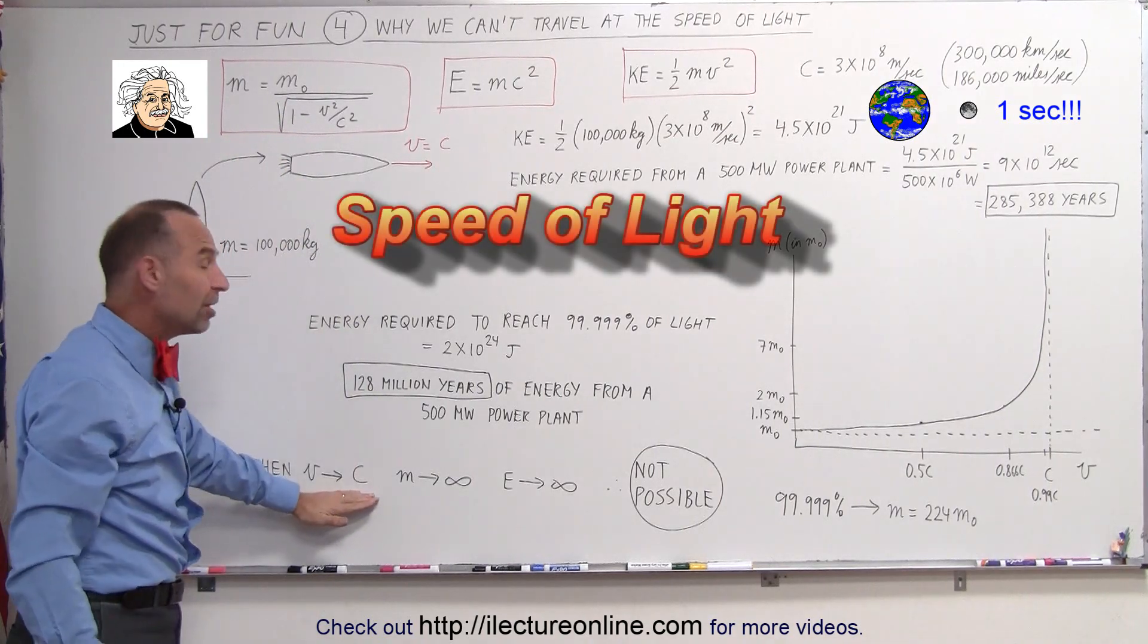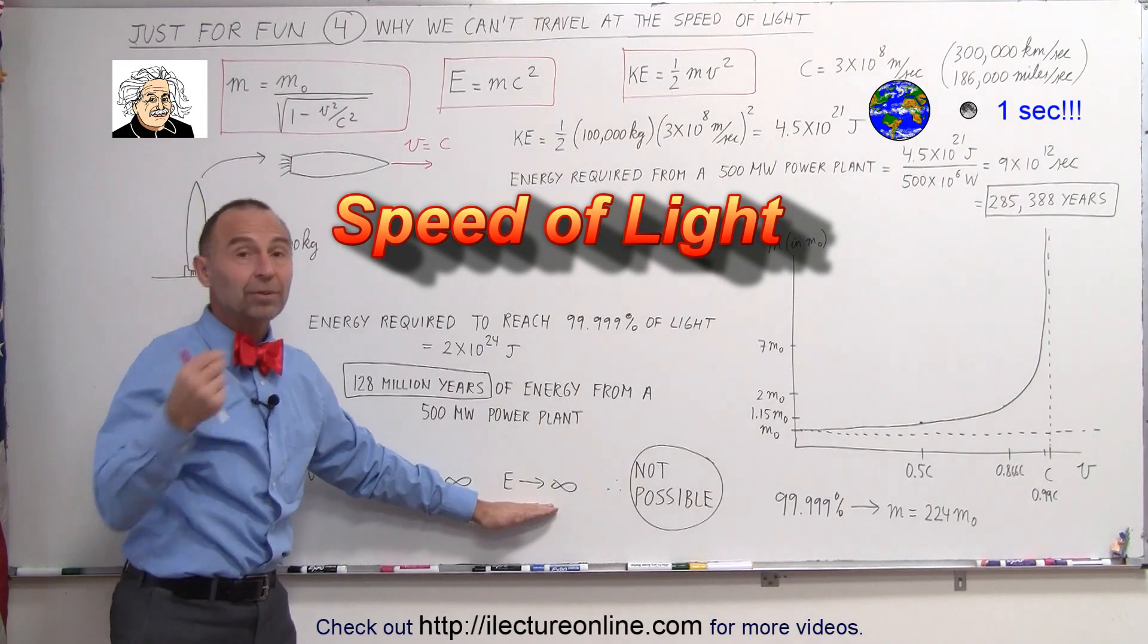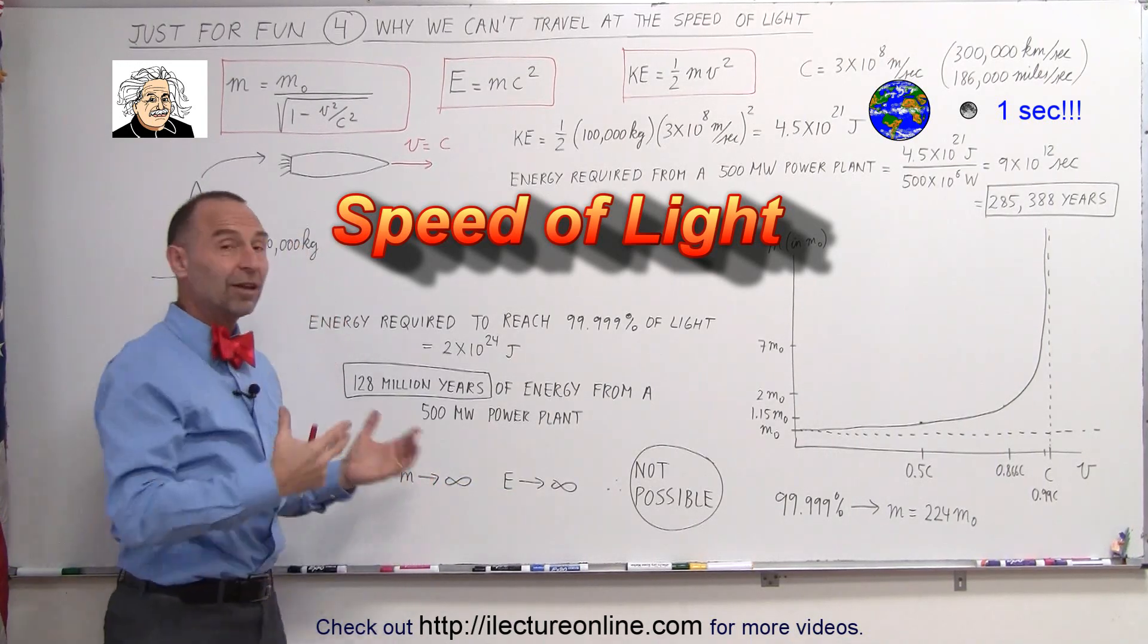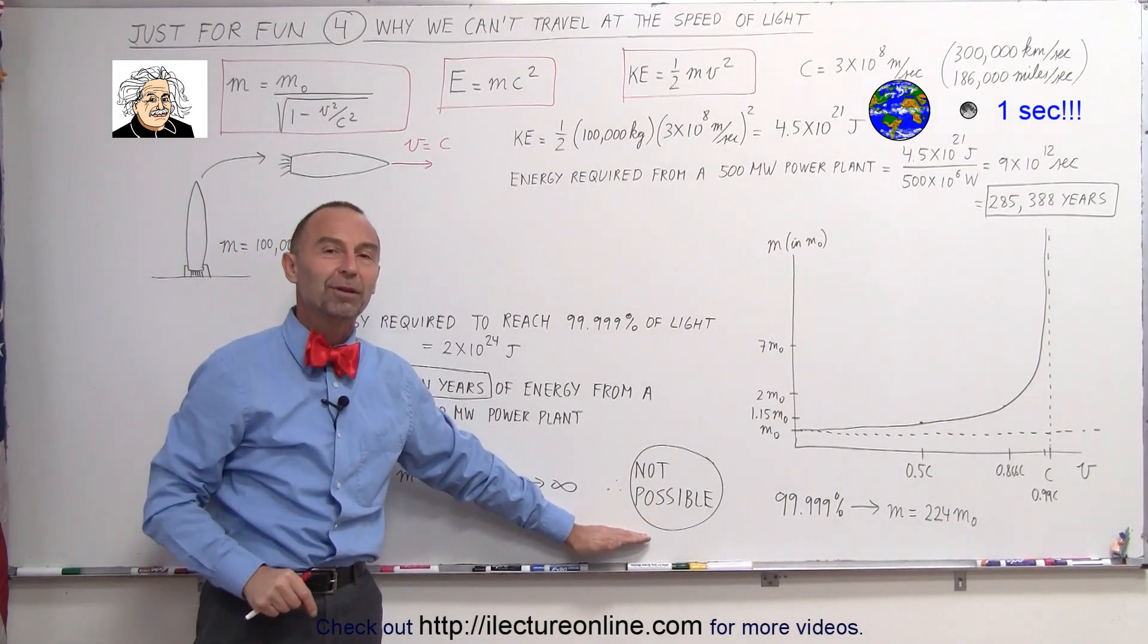When V reaches C, the speed of light, the mass would become infinite, the energy required to get up to that speed to produce that mass is infinite, and therefore it is not possible to ever reach the speed of light.